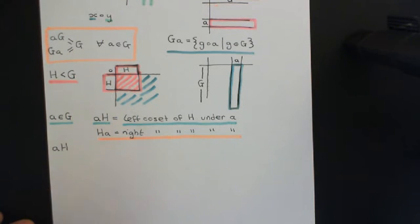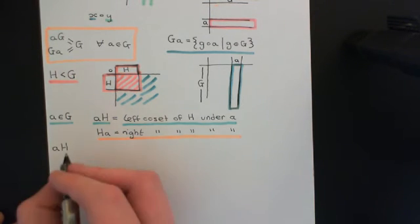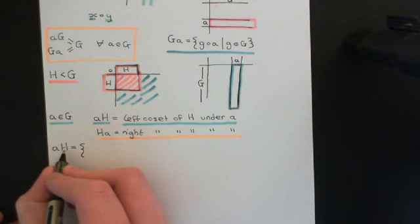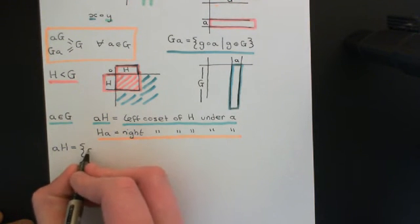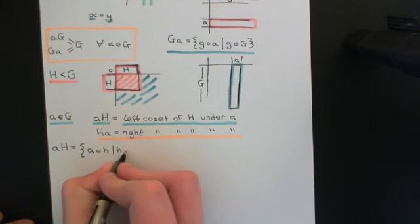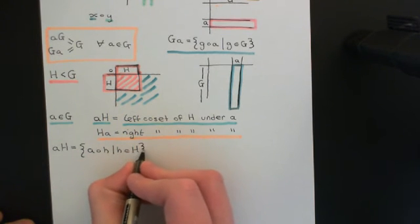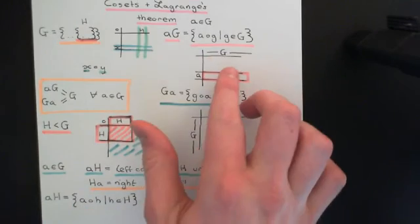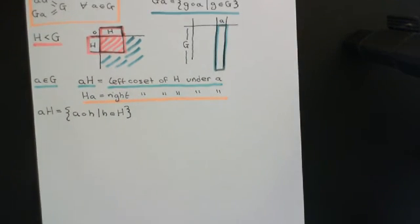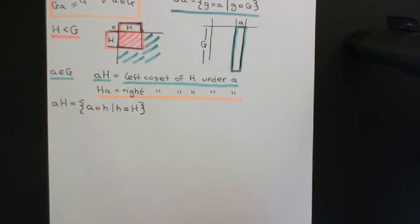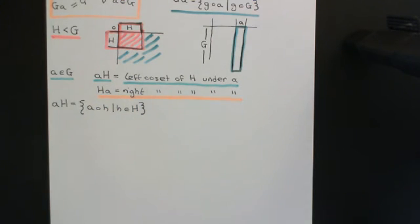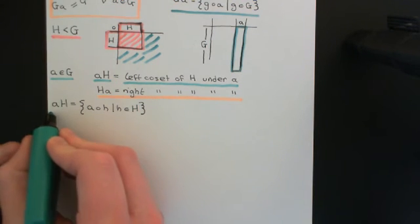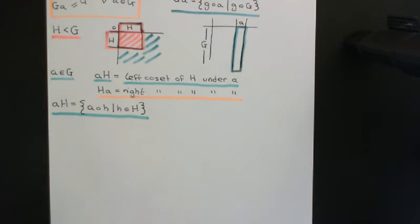The set AH — the left coset of capital H under little a — is defined to be the set of all elements of capital H left multiplied by the element little a. So it's all things of the form a composed with little h, where little h is an element of capital H. Rather than doing it with the entire group, I am now doing it with a subgroup. I go through every element of the subgroup and left multiply it by a, collecting all the results into a set.